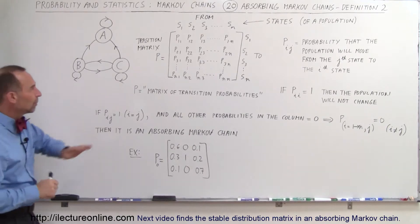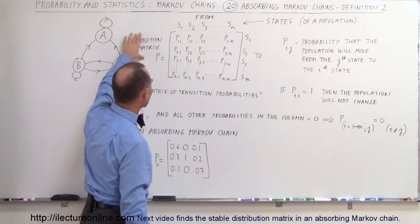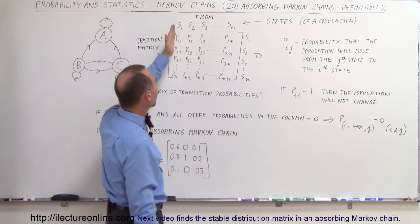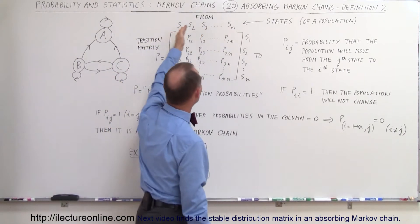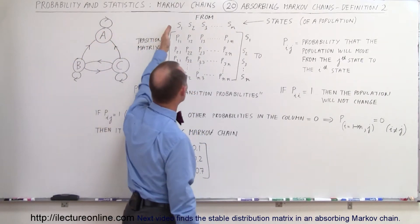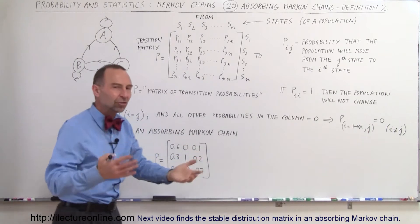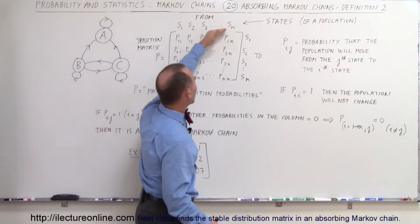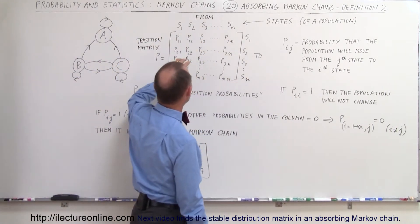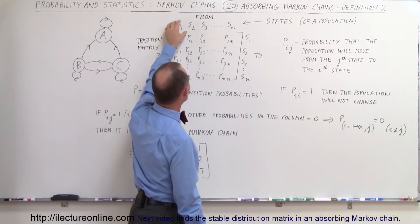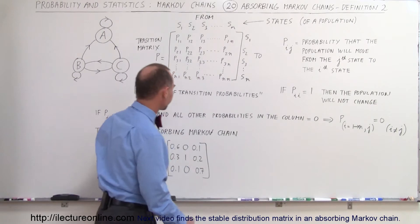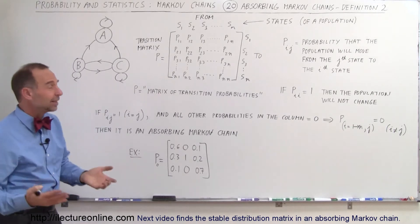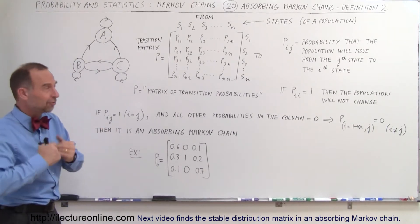Getting back to the language: this here is what we call a transition matrix. It contains the probabilities of how the populations will shift back and forth between what we call the states. The letters up here represent states — in this case A, B, and C — the number of stores, population distributions, different countries, different states, whatever it may be. These are the from-states and the to-states, and the P's indicate the probability that a certain percentage of the population from one state will go to a different state. P is also sometimes called the matrix of transition probabilities, or the probability matrix.